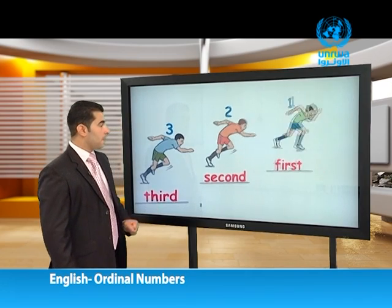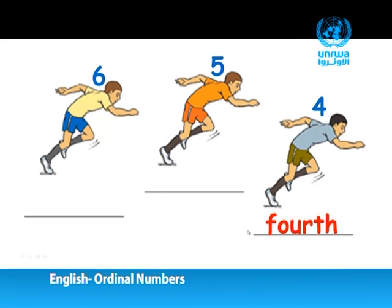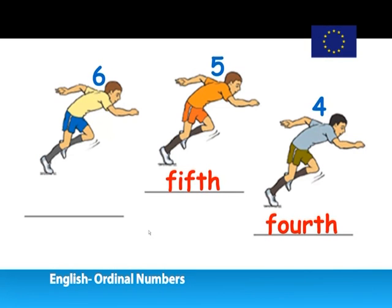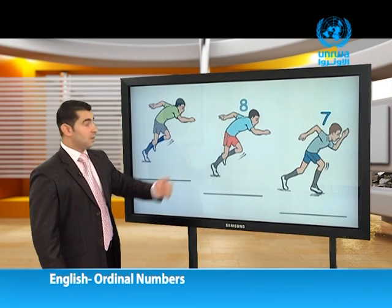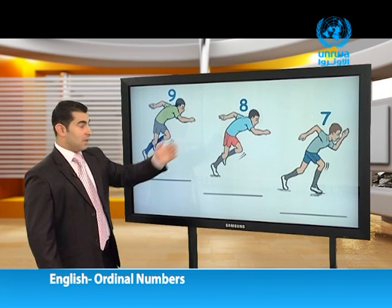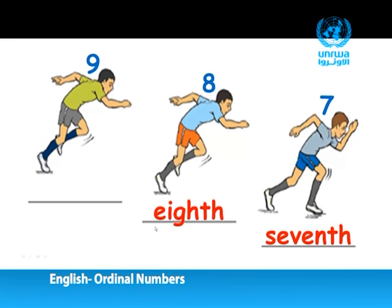Let's continue. This is number four, five, and six. Four becomes 'fourth,' five — 'fifth,' six — 'sixth.' Good. Then number seven, eight, and nine: seven becomes 'seventh,' eight becomes 'eighth,' nine becomes 'ninth.'